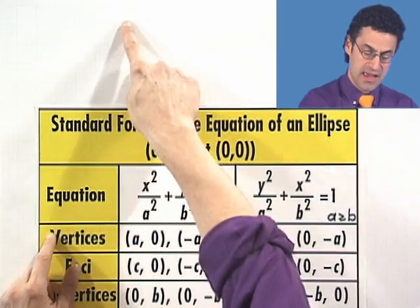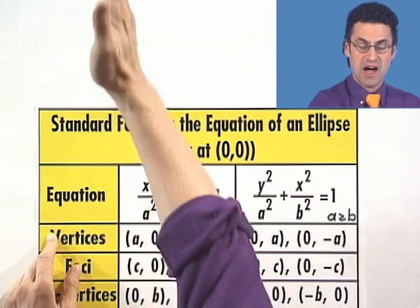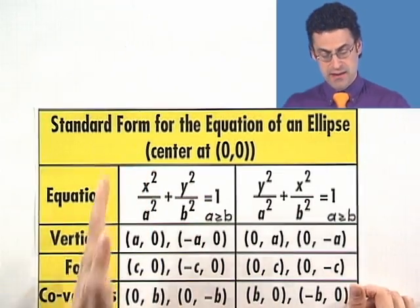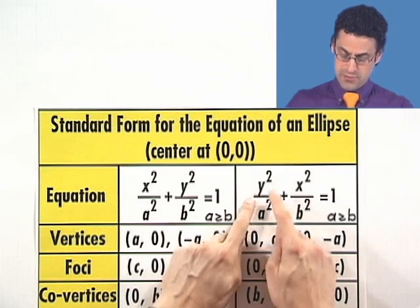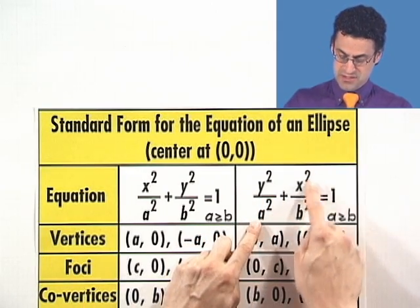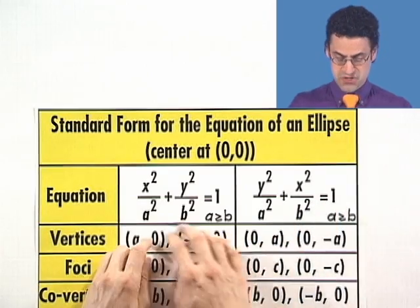In the case when it's actually an ellipse that's sort of on its side, at least, then we have that major axis being in sort of the y direction, and then we write the y first. And so I write y squared over that a squared plus x squared over b squared equals 1. This is the generic form.